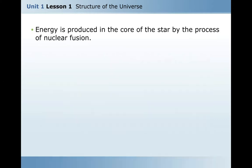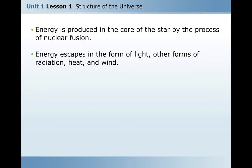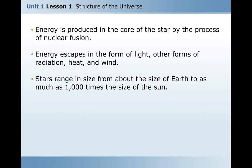Energy is produced in the core of a star by the process of nuclear fusion. Energy escapes in the form of light, other forms of radiation, heat, and wind. Stars range in size from about the size of Earth to as much as 1,000 times the size of the sun.